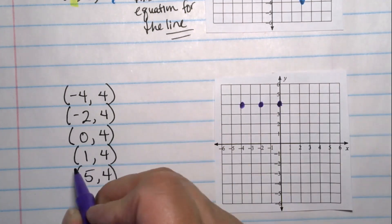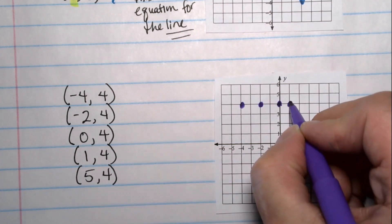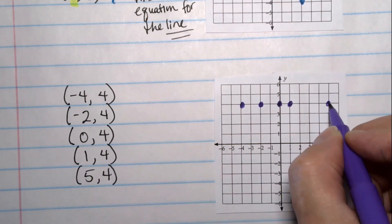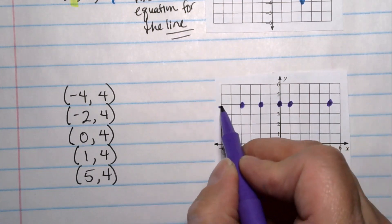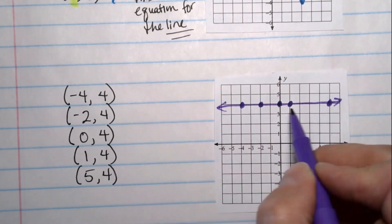1, 4. And 5, 4. Well, here we get a horizontal line that's going through the y-intercept of 4.